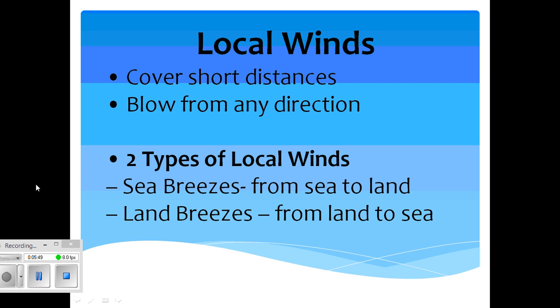Now, continuing into local winds. Local winds cover short distances. They blow from any direction. And there are two types of local winds. They include sea breezes, which are winds from sea to land. And there are land breezes, which are winds from land to sea.